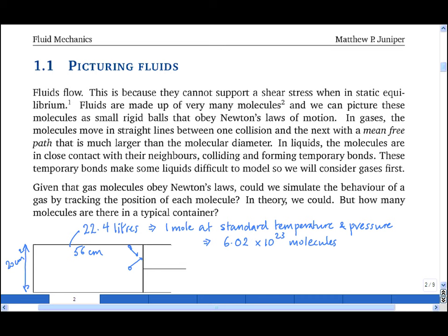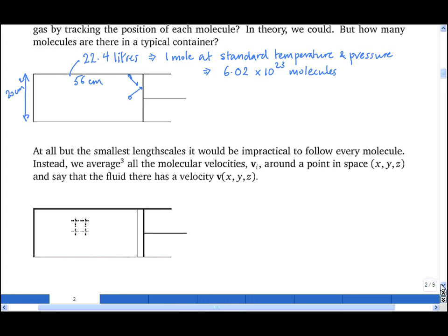Because it's impossible to follow every single molecule, instead we zoom out and look at the average properties of a fluid. And we do this around points in space. First of all, I define a coordinate system. Then I look in a region of space and work out the average molecular velocity around this point in space.